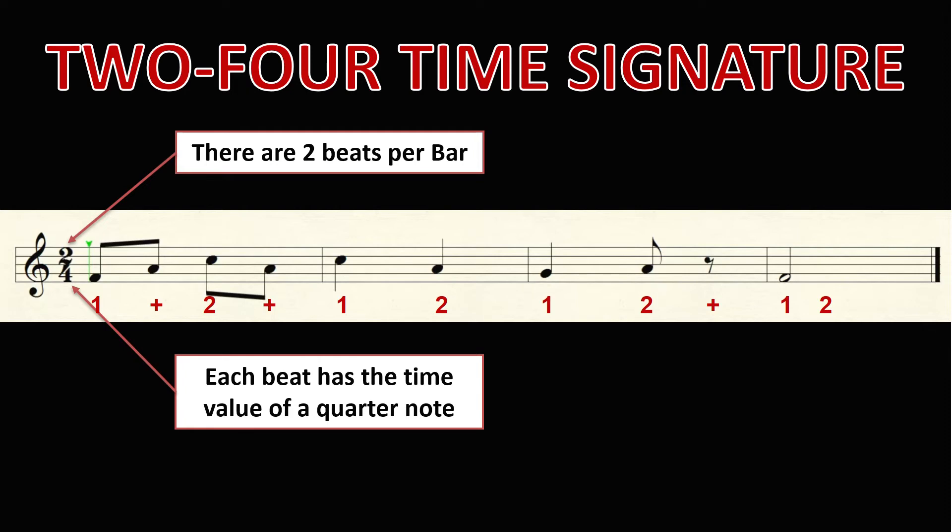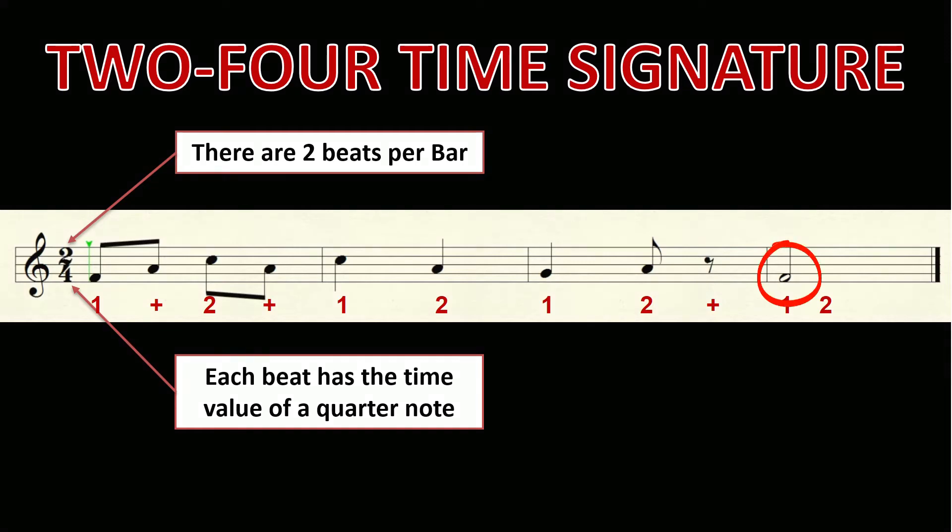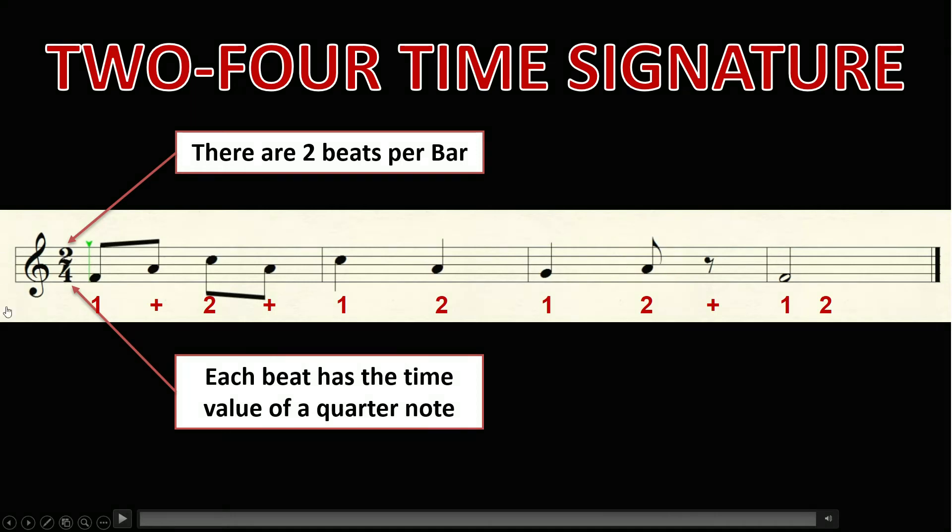So since there can only be two beats in a bar, the highest note value that we can write on the staff is a half note, because it already has two beats. Other note values like quarter notes and eighth notes can be written on the music staff in different combinations, like two quarter notes, one quarter note and two eighth notes, one quarter rest, two eighth notes and two eighth rests, etc. Try to practice counting 2-4 time based on our example here, so you can get used to this time signature.